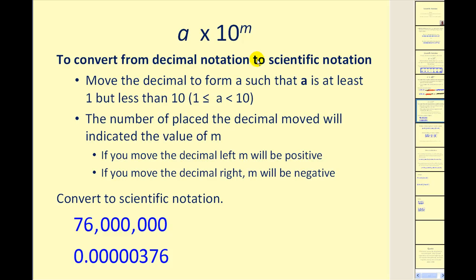Next we'll convert a number in decimal notation to scientific notation. The steps are: move the decimal to form A such that A is at least 1 but less than 10. The number of places the decimal moves will indicate the value of M. If you move to the left, M is positive; if you move to the right, M is negative. We want to make sense of this, not just memorize it. The first step is to determine where the decimal should be so that A is at least 1 but less than 10.